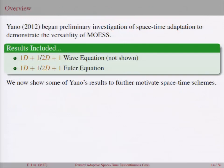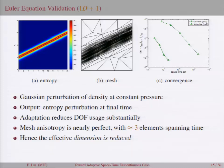So, Yano had some preliminary investigation of space-time adaptation to demonstrate the versatility of his adaptation algorithm, which I will now show as further motivation for why space-time could be a very effective method. In this case, we're solving a 1D space plus one temporal dimension, so it's a 2D problem. It's the Euler equations and we're exciting the entropy mode. So, it's a simple Gaussian perturbation and the output of interest is just like the entropy perturbation at the final time. And on the right here is a convergence study between the adapted in the solid line and a uniform refinement in the dotted line. And you can see that the number of degrees of freedom saved is pretty substantial. And it's also even more clear from the mesh because in the time direction, the number of elements that span this thing is only about three. So, it means we're getting nearly perfect anisotropy. And what that means from the earlier slides is that we've reduced the dimension of this problem.